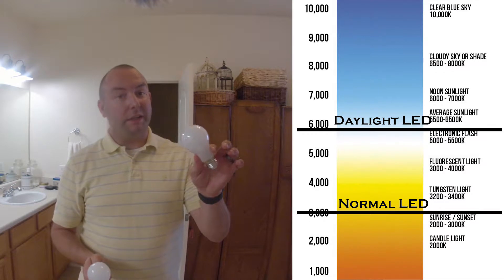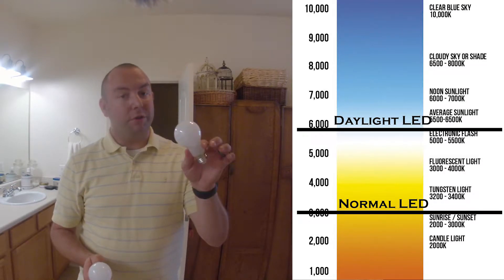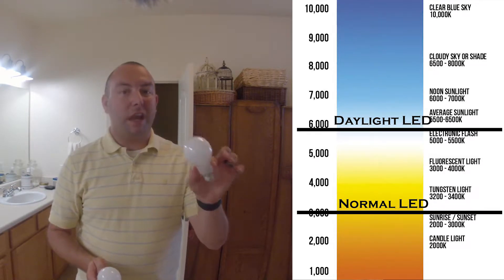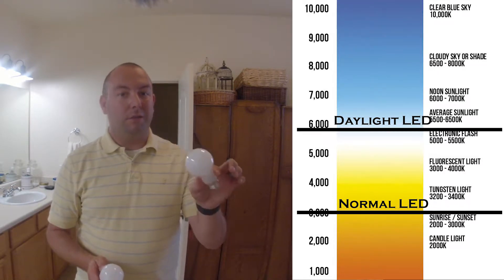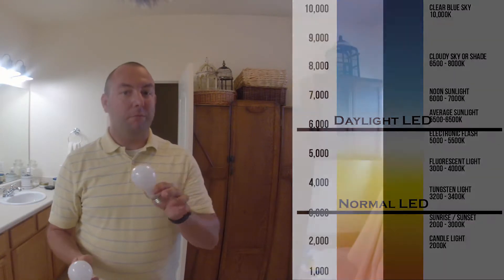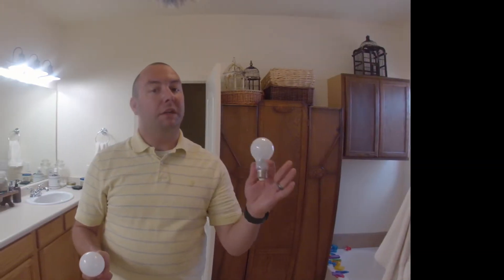Your daylight LED bulbs, when they produce white light, are above 6000 degrees Kelvin. So it's a little bit more bluish because it's on the top end of that visible light spectrum.